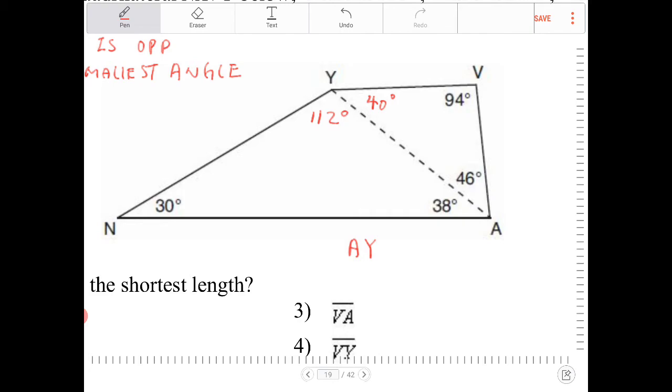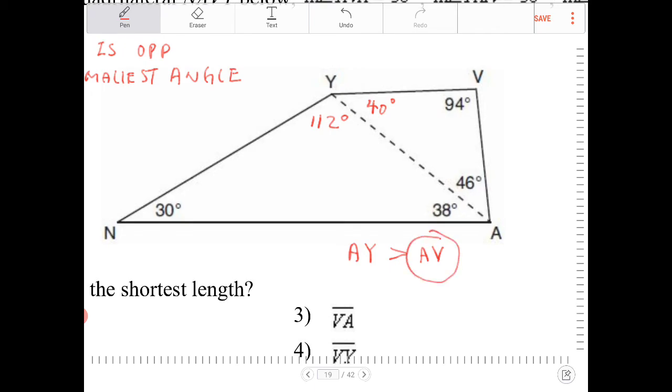So within triangle AVY, the shortest side will be AV. AY happens to be opposite of 94 degrees, which is the longest side within triangle AVY. Because of this, I can safely conclude that AY is greater than AV. We've come to our conclusion that AV is going to be the shortest side between both triangles.